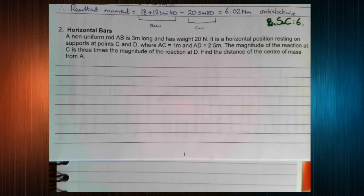Here's our example: A non-uniform rod AB is three meters long and has weight 20 newtons. It is in a horizontal position resting on supports at points C and D, where AC is 1 meter and AD is 2.5 meters. The magnitude of the reaction at C is three times the magnitude of the reaction at D. Find the distance of the center of mass from A.